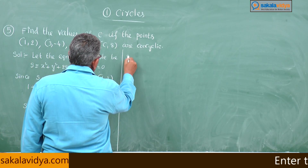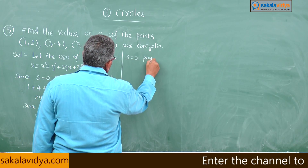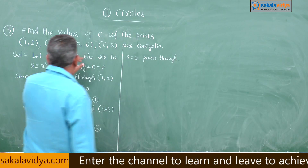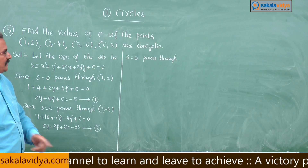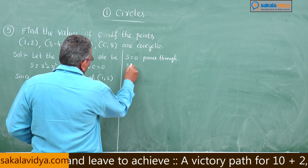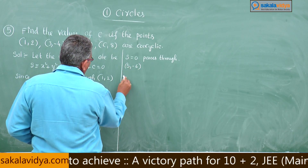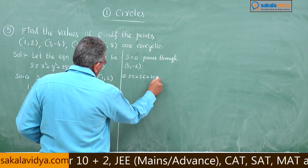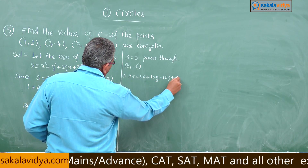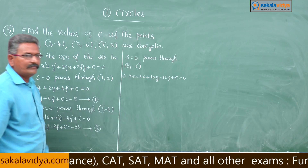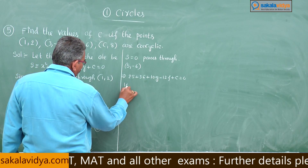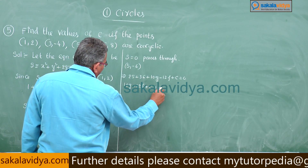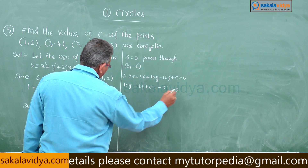Since S = 0 passes through the third point (5, −6): 25 + 36 + 10g − 12f + c = 0, giving 10g − 12f + c = −61. Call this Equation 3.